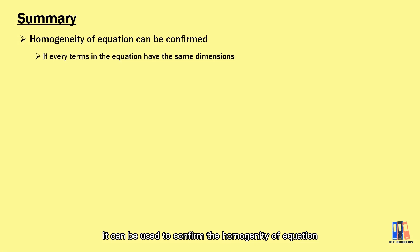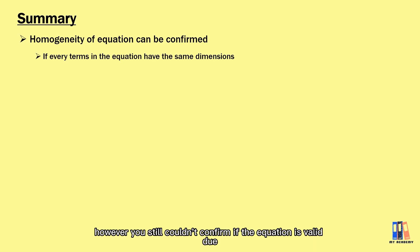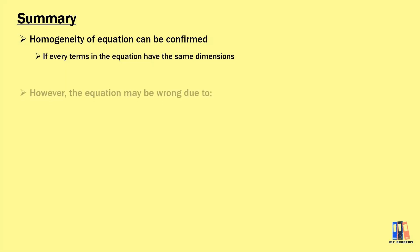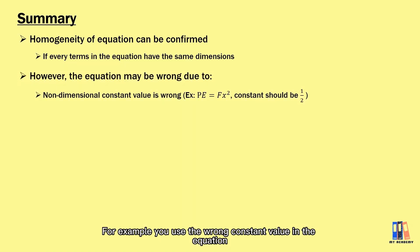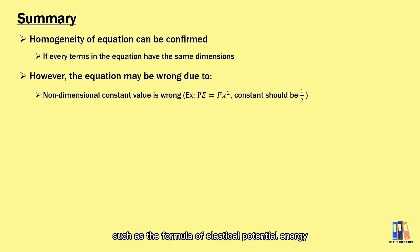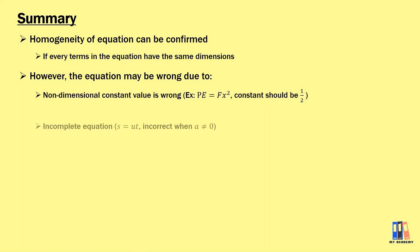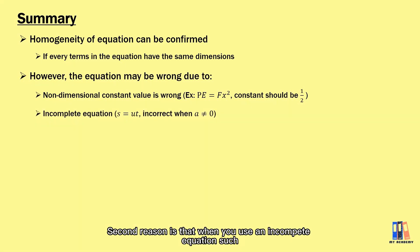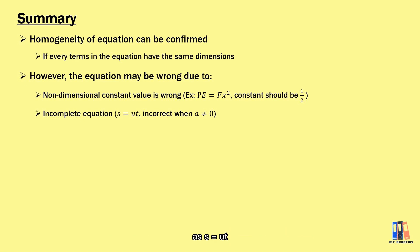To summarize, dimensional analysis can be used to confirm the homogeneity of equations, with the condition that every term in the equation must have the same dimension. However, you still cannot confirm if the equation is valid due to several reasons. For example, you may use the wrong constant value, such as the formula for elastic potential energy, which should be half fx squared.